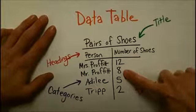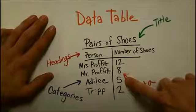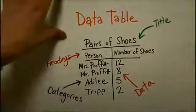I have 12 shoes. Mr. Profit has 8 pairs of shoes. Adley has 5 pairs of shoes. And Tripp has 2 pairs of shoes. We'll come back to that data in a minute.